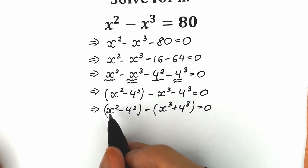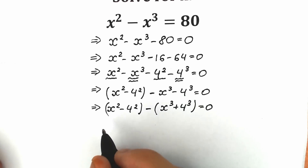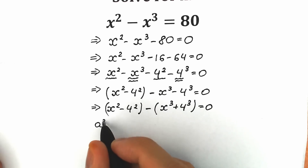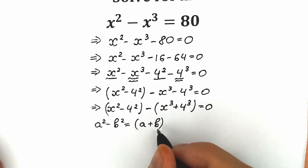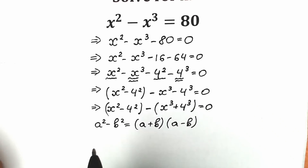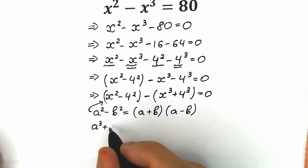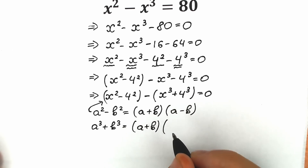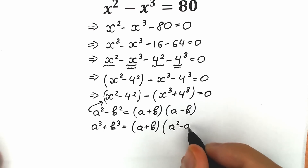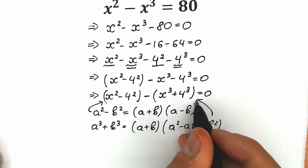If you look closely, we have a difference of two squares and a sum of two cubes. This is a great moment to remember school identities. The first identity: a squared minus b squared equals (a plus b)(a minus b). The second identity: a cubed plus b cubed equals (a plus b)(a squared minus ab plus b squared). We are going to apply both formulas here.